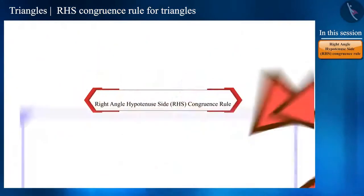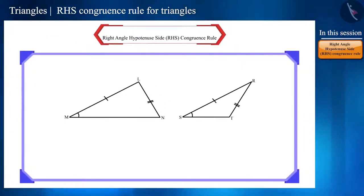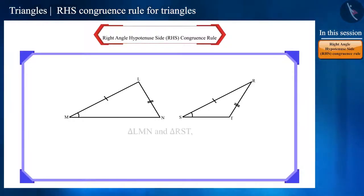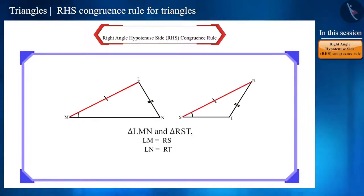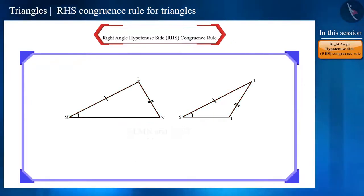To understand the RHS congruence rule, we will start with a pair of triangles. In the two triangles, two sides and one angle are equal. But these two triangles are not congruent.